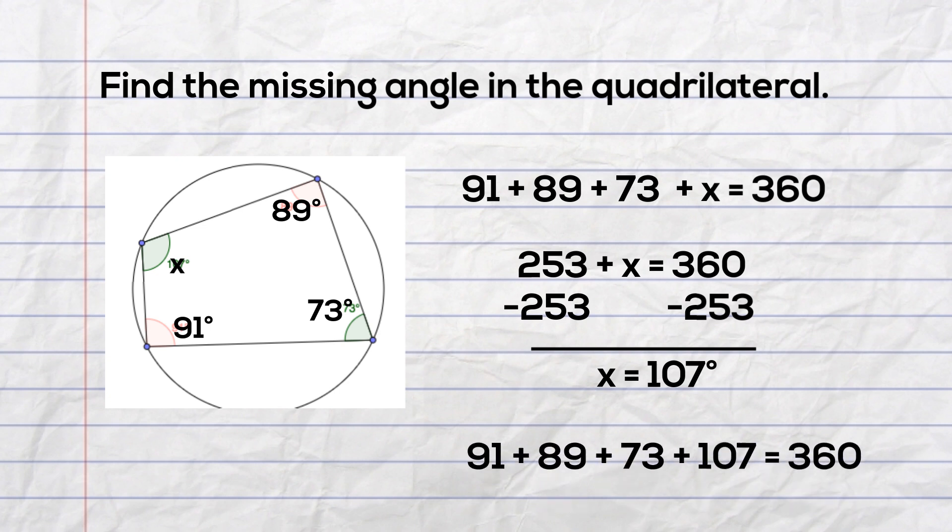Now let's check our work. We have 91 plus 89 plus 73 plus 107 and that does equal 360. So the missing angle is correct.